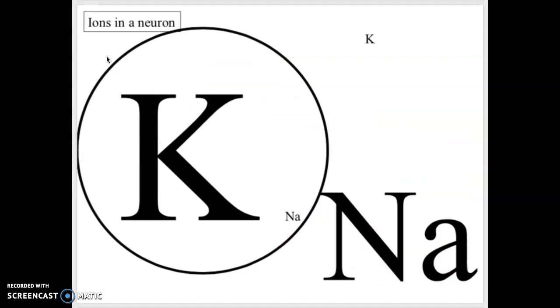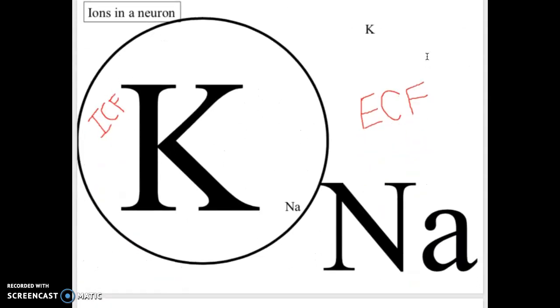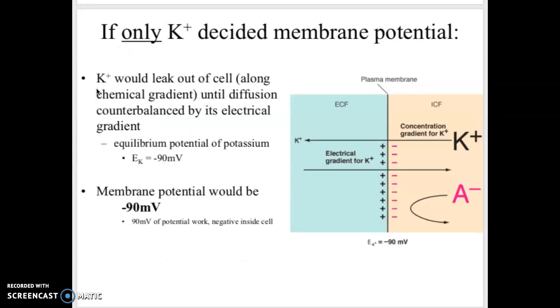This slide is basically just showing you the same thing that I drew: there are a lot of potassium ions inside of the cell and a lot of sodium ions outside of the cell. We call this intracellular fluid and extracellular fluid. The membrane potential is based off of several ions. The two most important that you need to know are sodium and potassium. If we lived in a hypothetical world where potassium was the only thing deciding the membrane potential, it would leak out of the cell until it's balanced by the electrical gradient. It would be negative 90.